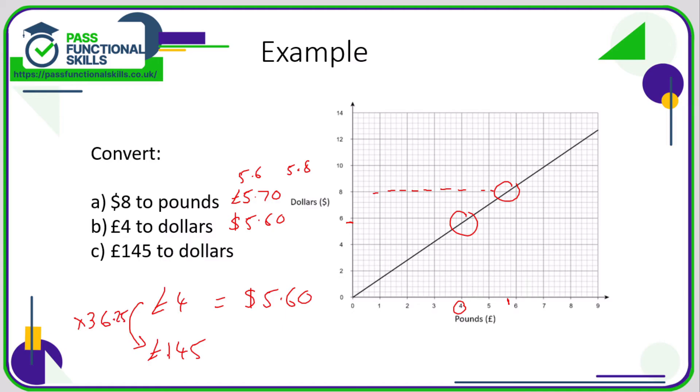We're basically scaling up this conversion rate 36.25 times. Therefore, I need to multiply the 5.60 by 36.25, and 36.25 times 5.60 comes to a total of 203 dollars.